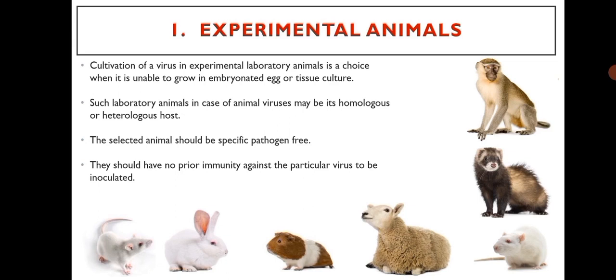Cultivation of virus in experimental laboratory animals is a choice when it is unable to grow in embryonated egg or tissue culture. Such laboratory animals in case of animal viruses may be its homologous or heterologous host. The selected animal should be specific pathogen free and should have no prior immunity against the particular virus to be inoculated.